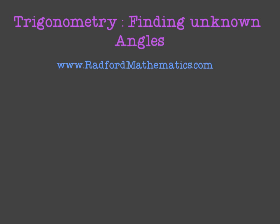Let's say we're given the following right-angle triangle, and we're given the side length 3 and the hypotenuse 10, and we are asked to find the angle, which we'll label A. The first steps are more or less identical to the ones we've seen in the previous video.